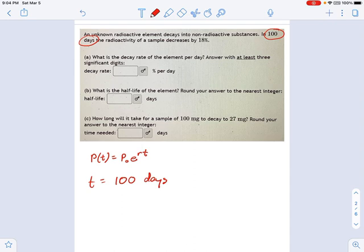The radioactivity of a sample decreases by 18%. So what's decreasing? It's how much of a sample you have. You can think of radioactivity as your population, if you like, whatever that is decreased by 18%. So I don't know what P is or P naught, I have no idea. And I don't know what rate is, but I do know that it's 100 days for my time.